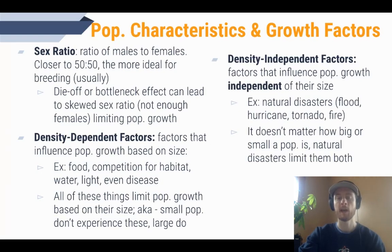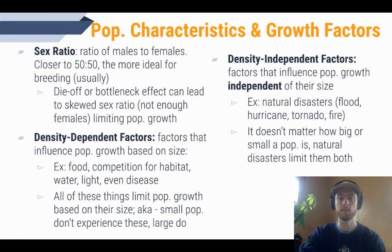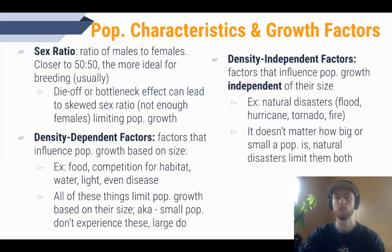Sex ratio is the last population characteristic we'll discuss today, and it's a very important one. It's simply the ratio of males to females in a population. Generally the closer to 50-50, the more optimal for reproduction. Events that cause large die-offs, or bottleneck events like natural disasters, can leave already small populations with really skewed sex ratios. For instance, a 75-25 ratio of males to females means very few females, which significantly limits population growth and recovery.